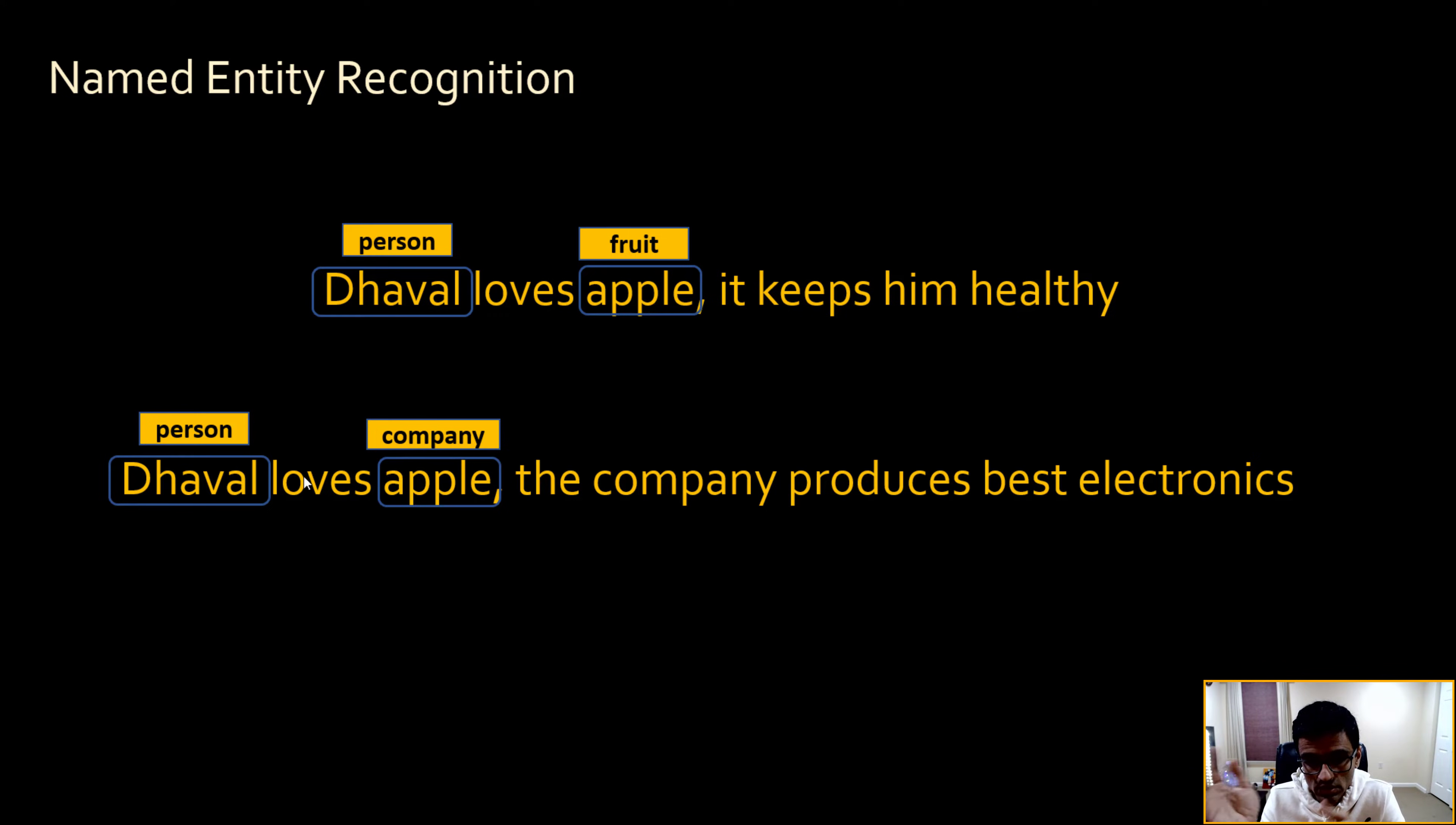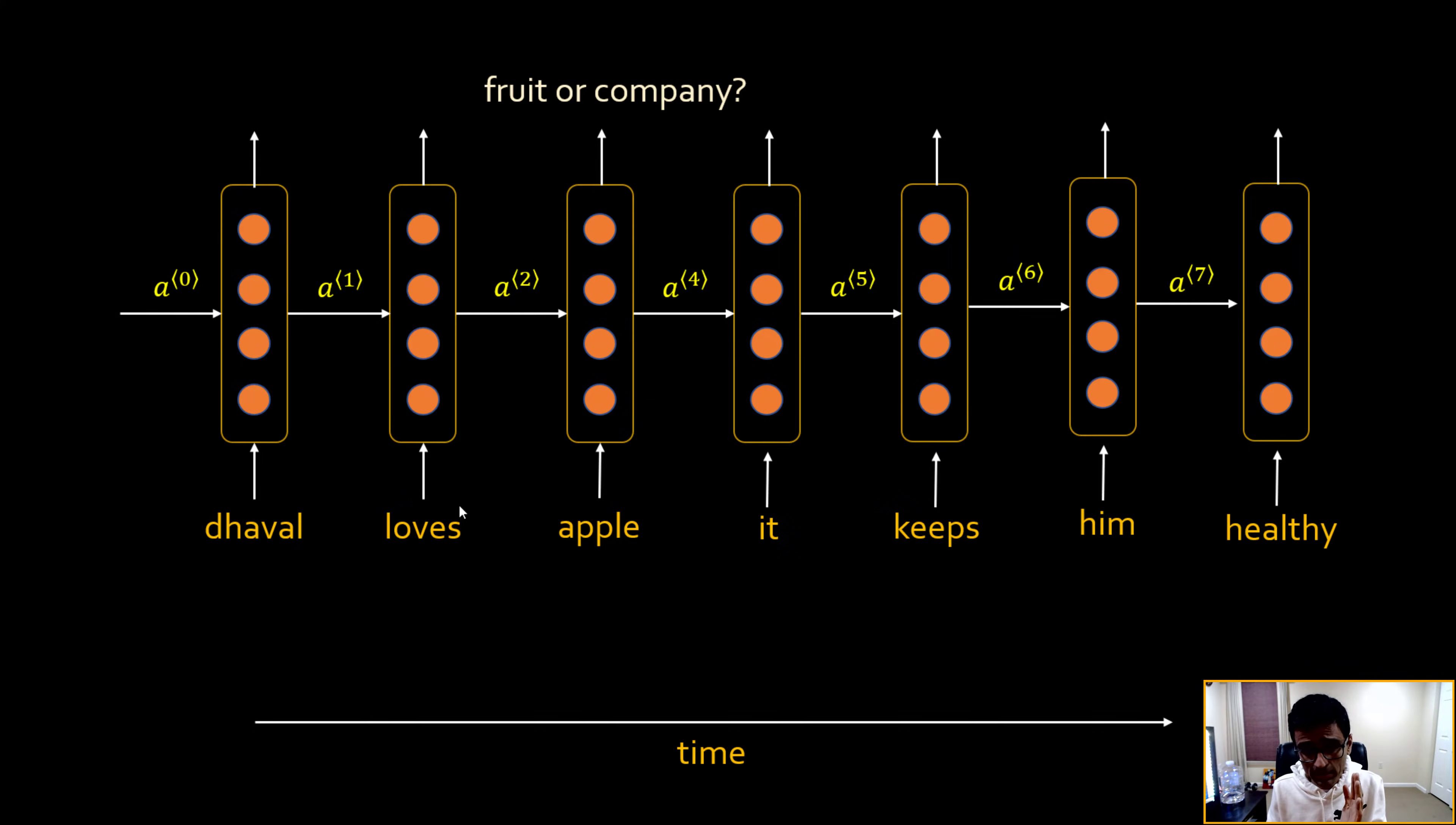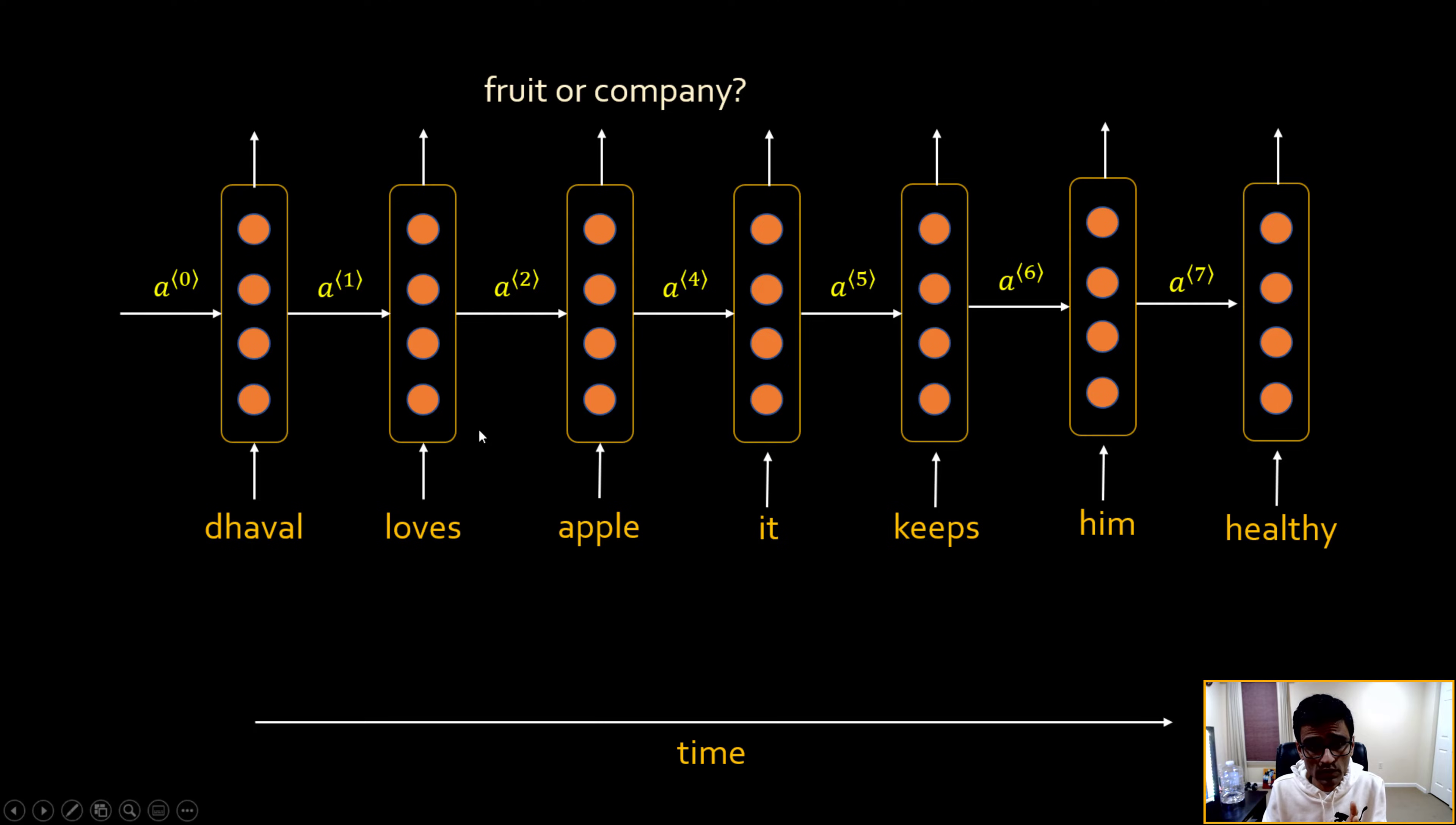Now if you observe the statement carefully, the words which come prior to Apple, they are same. So until you look at the sentence after Apple, you won't know if Apple is a fruit or a company. Now if you look at your simple RNN, which is a single direction, left to right, then the word Apple will have influence only from the previous words, which is Dhaval loves.